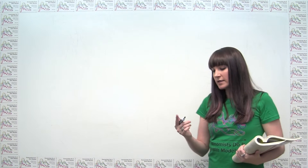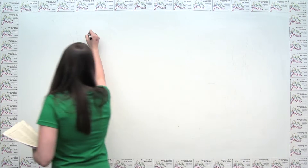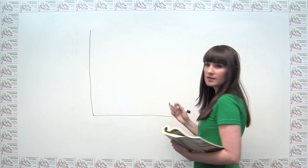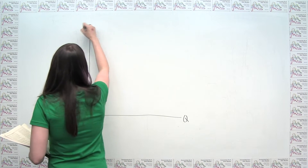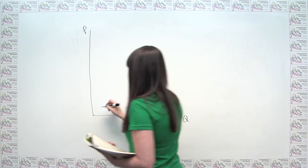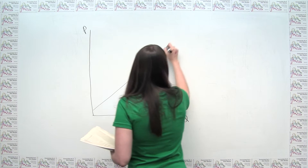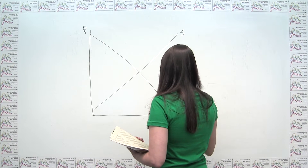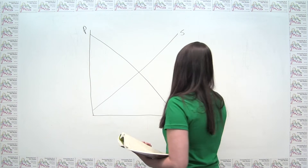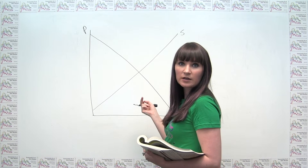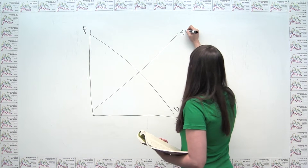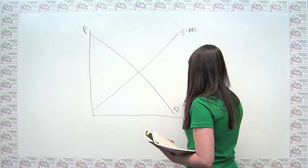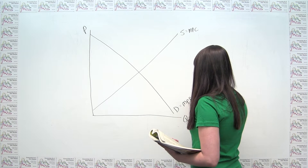So let's think about how to analyze that. Let's start by drawing our market that's causing this pollution and thinking about various quantities associated with this market — a typical supply curve and a typical demand curve. The supply curve represents marginal private cost to the producer and the demand curve represents marginal private benefit to the consumer.